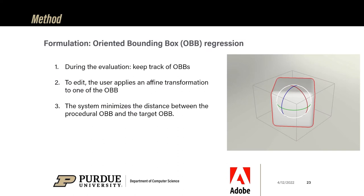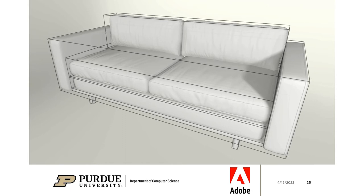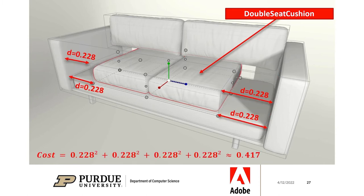During the forward path, we keep track of the position of oriented bounding boxes of components of the procedural model. To make an edit, the user applies an affine transformation on one of the components, and our system changes the input parameters to match. Here is an example with a sofa procedural model — you can see bounding boxes of each subpart. We click on the seat cushions, scale it smaller, and our system modifies the procedural model so that the double seat cushion bounding box matches the target set by the user.